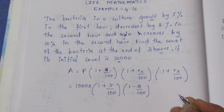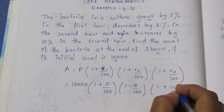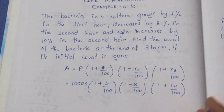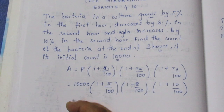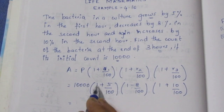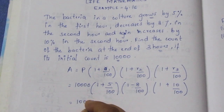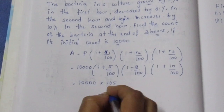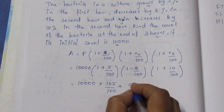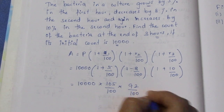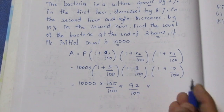Substituting the values: 10,000 × (105/100) × (92/100) × (110/100). Here, 100 minus 8 is 92, and 100 plus 10 is 110.